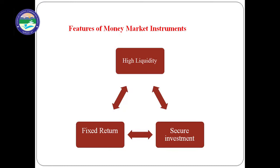Next is secure investment. These financial instruments are one of the most secure investment avenues available in the market. Issuers of money market instruments have a high credit rating and the returns are fixed beforehand. The risk of losing invested capital is very low. Third is fixed return. Since money market instruments are offered at a discount to the face value, the amount that the investor gets on maturity is decided in advance. This effectively helps individuals in choosing the investment which would suit their needs and investment horizon.